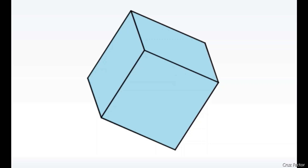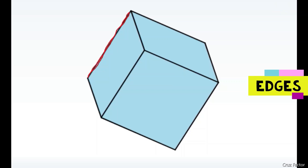Now let's look at the number of edges that a cube has. The edges are basically what it sounds like — it's the edge of the shape. So what I'm highlighting here, and here, and here, these are the edges of the cube. I'm going to highlight what they are so you can get a better visual of how many edges the cube has.